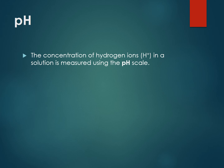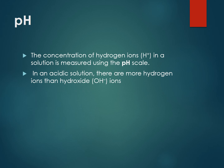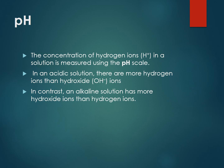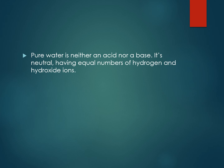pH is related to the concentration of hydrogen ions in a solution, and it's measured using the pH scale. In an acidic solution, there are more hydrogen ions than hydroxide ions. In contrast, an alkaline solution has more hydroxide ions than hydrogen ions. Pure water is neutral, meaning the hydroxide and hydrogen ions are equal.